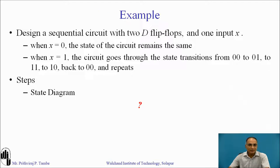This is a rough procedure for designing any sequential circuit. Let us see this with the help of one example. We will design a sequential circuit with two flip-flops which requires one external input x. When x is zero the state of the circuit remains the same. When x is one the circuit goes through the state transitions from 00 to 01, then to 11, then to 10, and back to 00, and repeats.